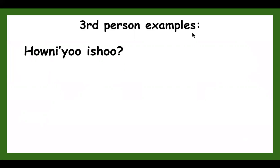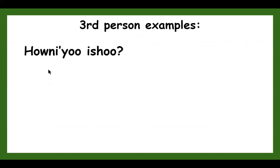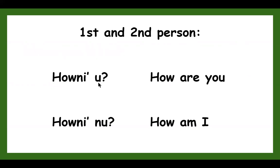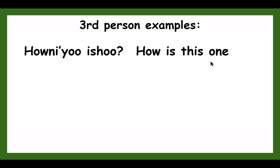But now when we get to the third person — someone other than you or I — we say honniya ishu. Notice the difference between honniya, meaning 'how is it with you,' and honniya ishu. The 'ishu' is a pronoun meaning 'you,' and the apostrophe Y-O-O is not a pronoun, it's just a predicate. Honniya ishu means 'how is it with this one?'